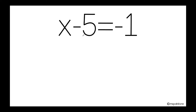As this number is subtracting my variable, the inverse operation of subtraction is addition. So I am going to add 5 here. And whatever happens on this side of the equation also needs to happen on the other side. So I'll do positive 5 here as well.